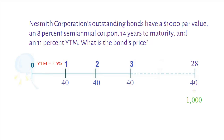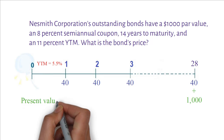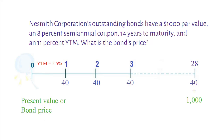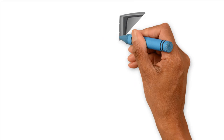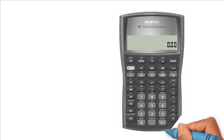So, the value of the bond today will be the present value of all future cash flows. To calculate this present value, which is the bond price, I will use the Texas BA2 Plus Financial Calculator.